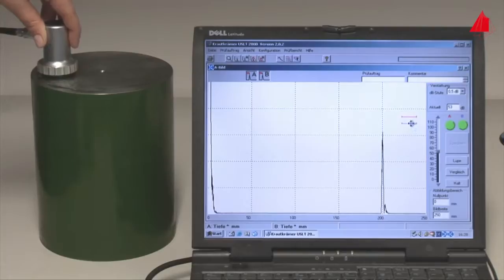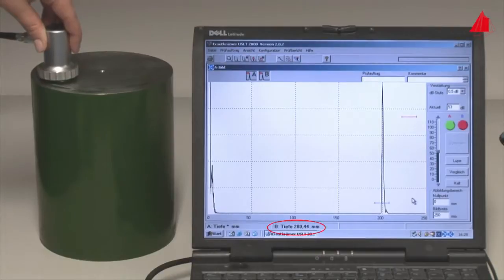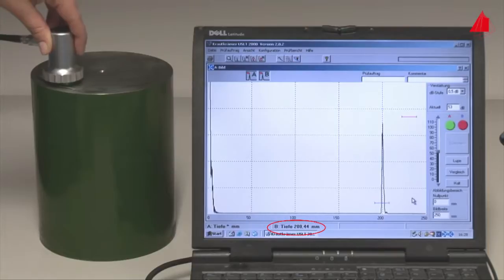With the help of so-called trigger gates, which may be set on the echoes with a computer mouse, the depth of the defects can easily be read off at the lower left-hand corner of the monitor. The cylinder back wall lies in a depth of about 200 millimeters below the probe, so the cylinder has a height of 200 millimeters.